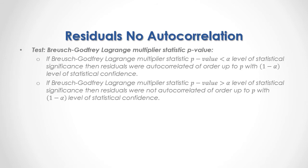What we are testing is the Breusch-Godfrey Lagrange multiplier statistic p-value. If the p-value is less than the alpha level of statistical significance, then residuals were autocorrelated of order up to p, with 1-alpha level of statistical confidence. On the other hand, if the p-value is greater than the alpha level of statistical significance, then residuals were not autocorrelated of order up to p, with 1-alpha level of statistical confidence.